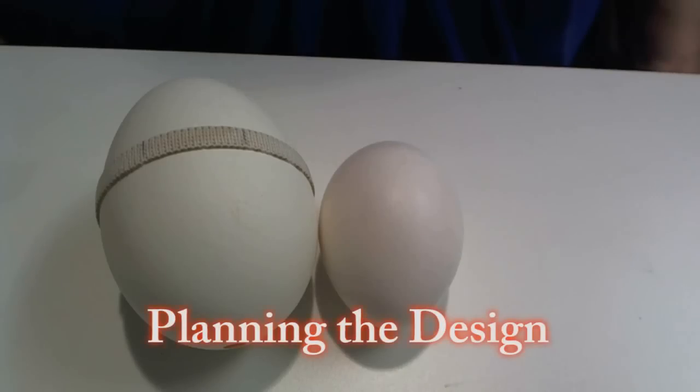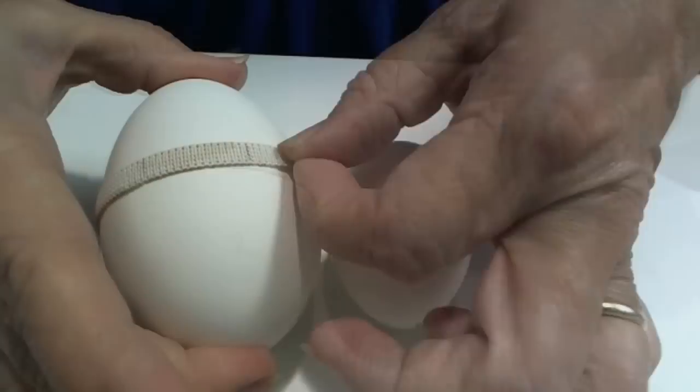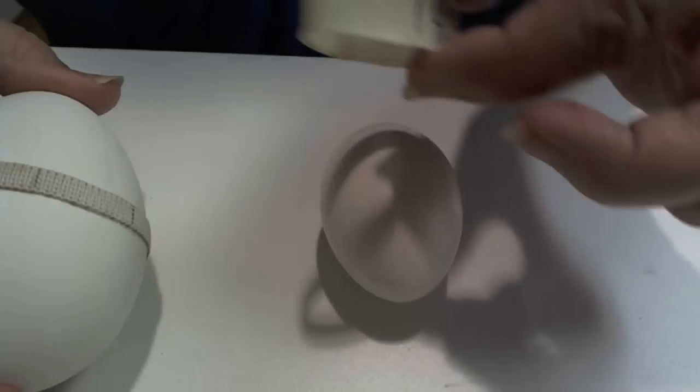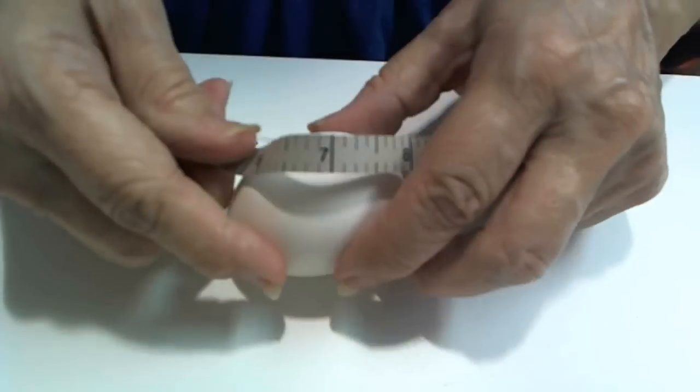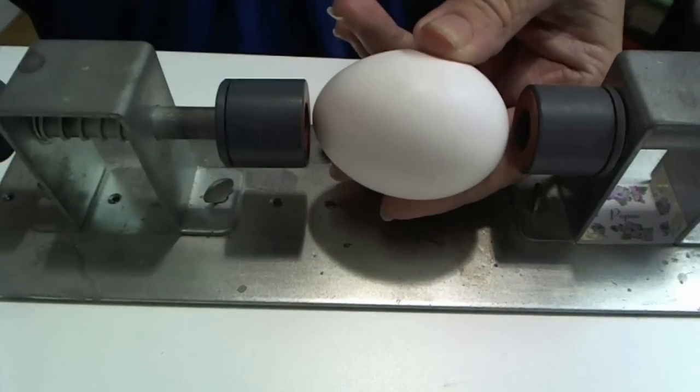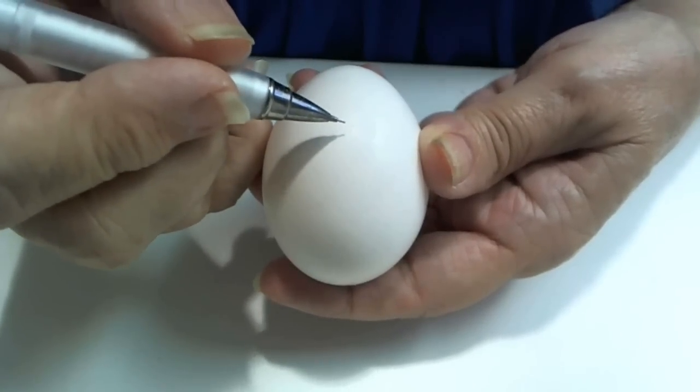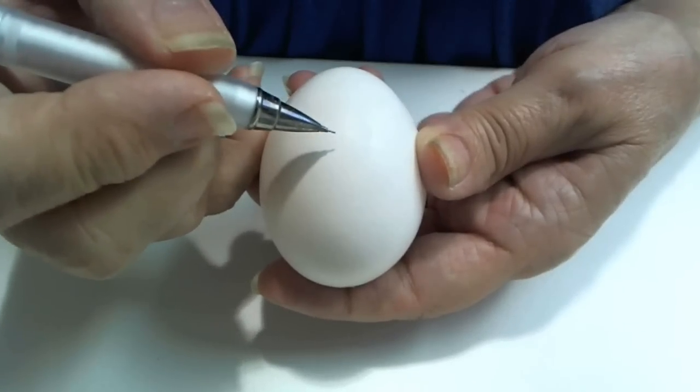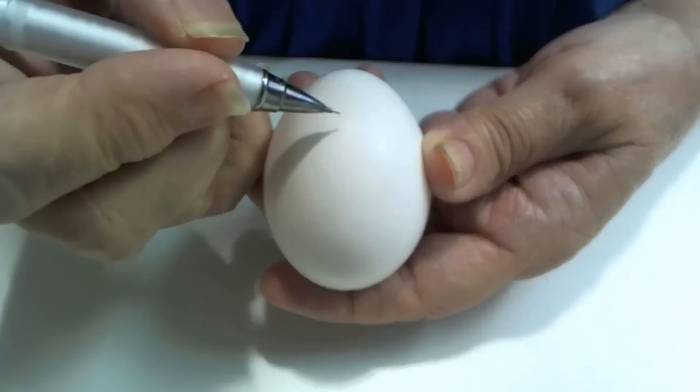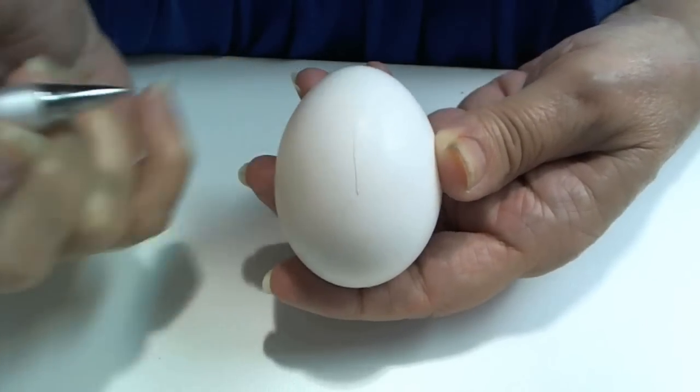Now it's time to measure our egg out for our designs. Some people use different methods. They can take elastic band or rubber band, tape measure, some use lathes. But I like to use a mechanical pencil. You can use a regular pencil. But I find that mechanical pencils have thinner lines.